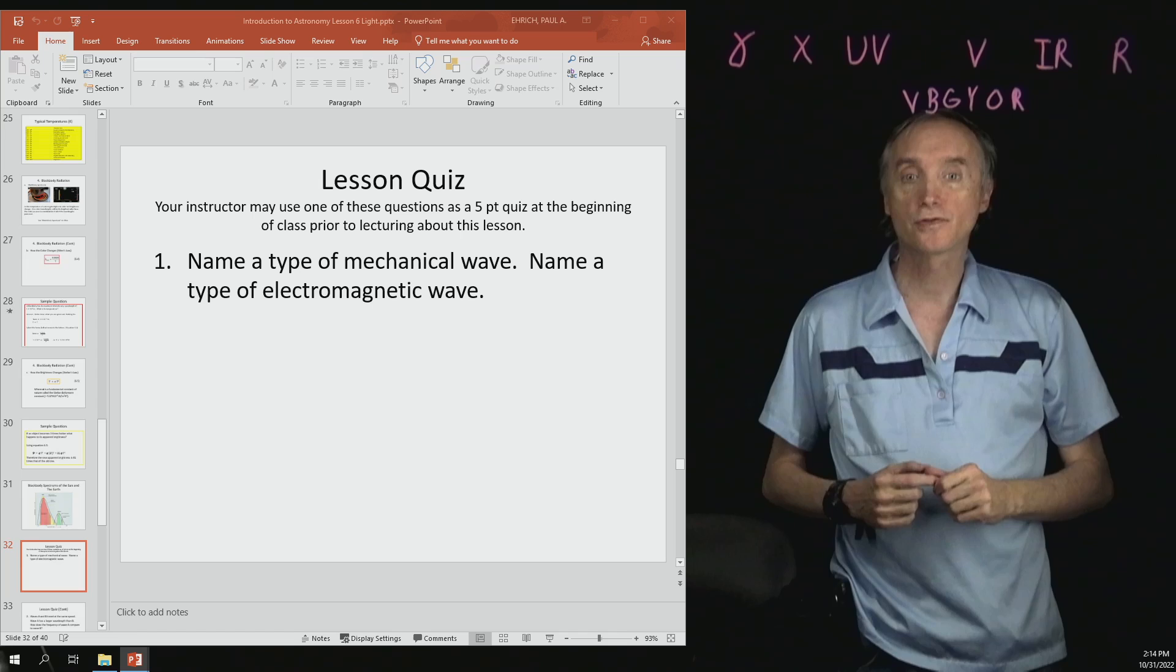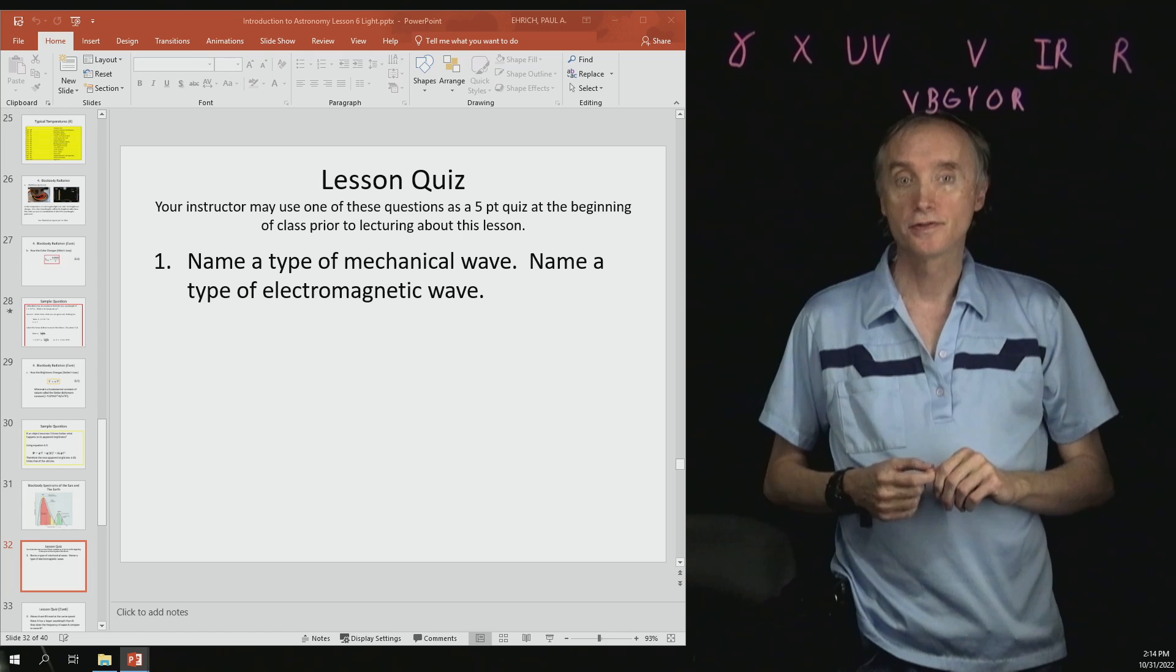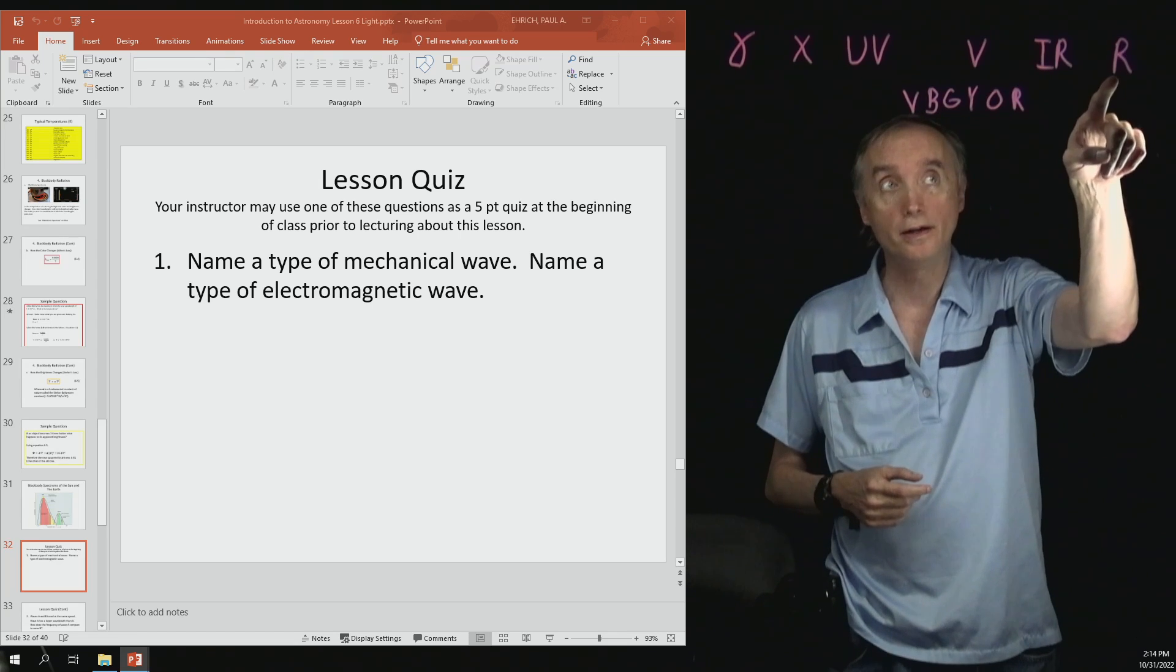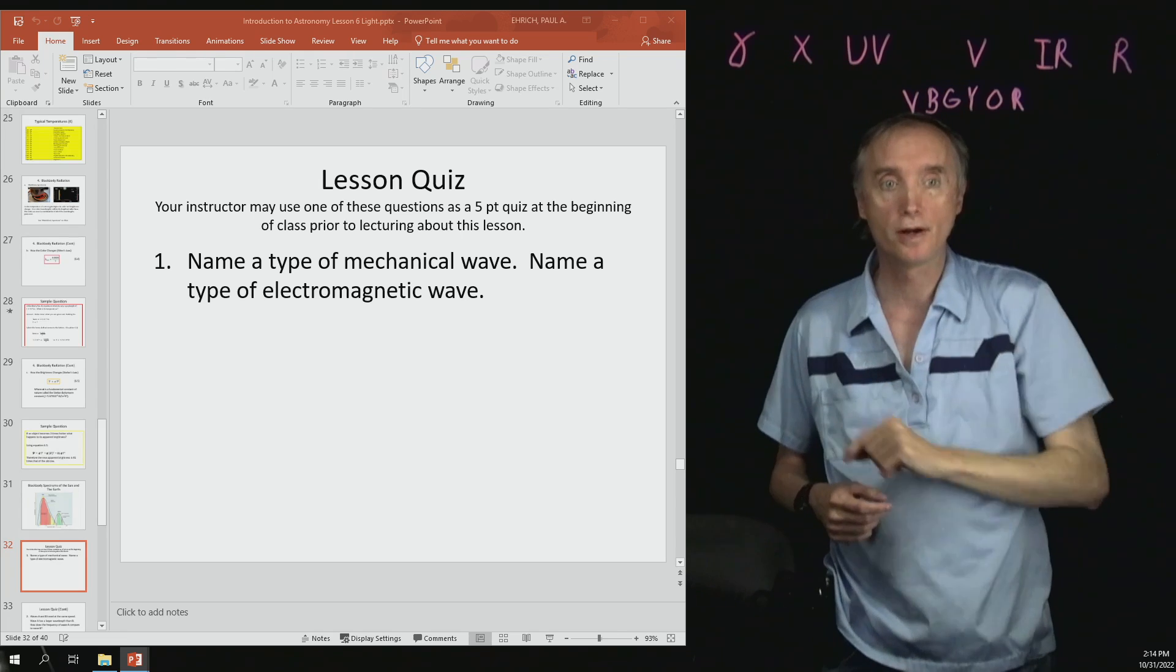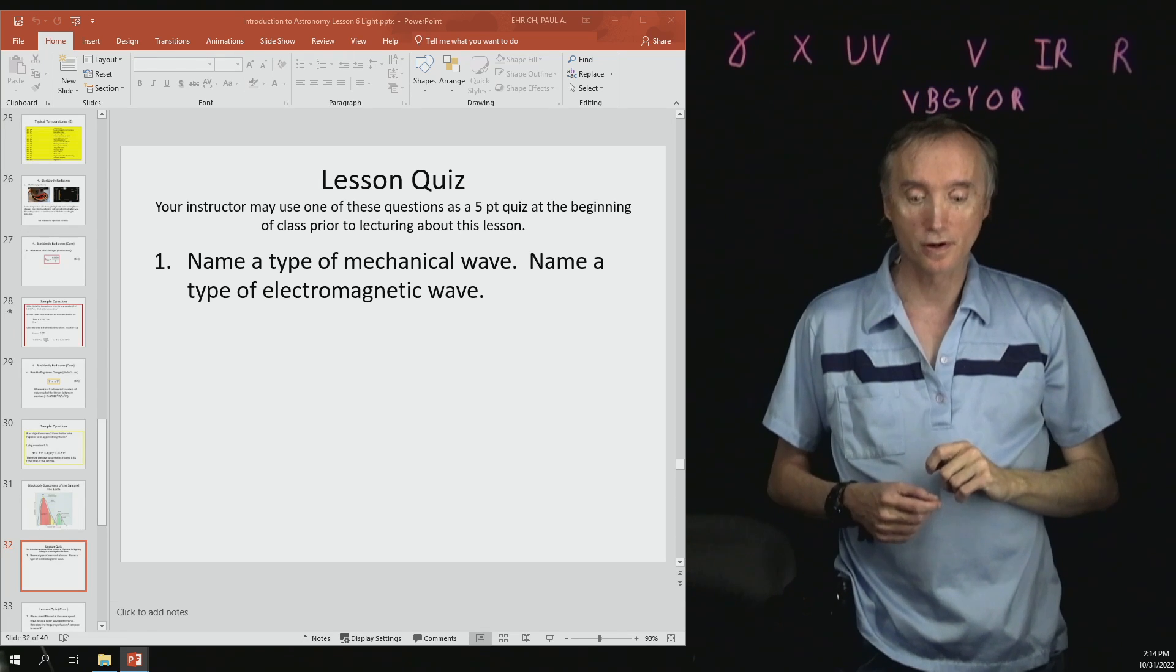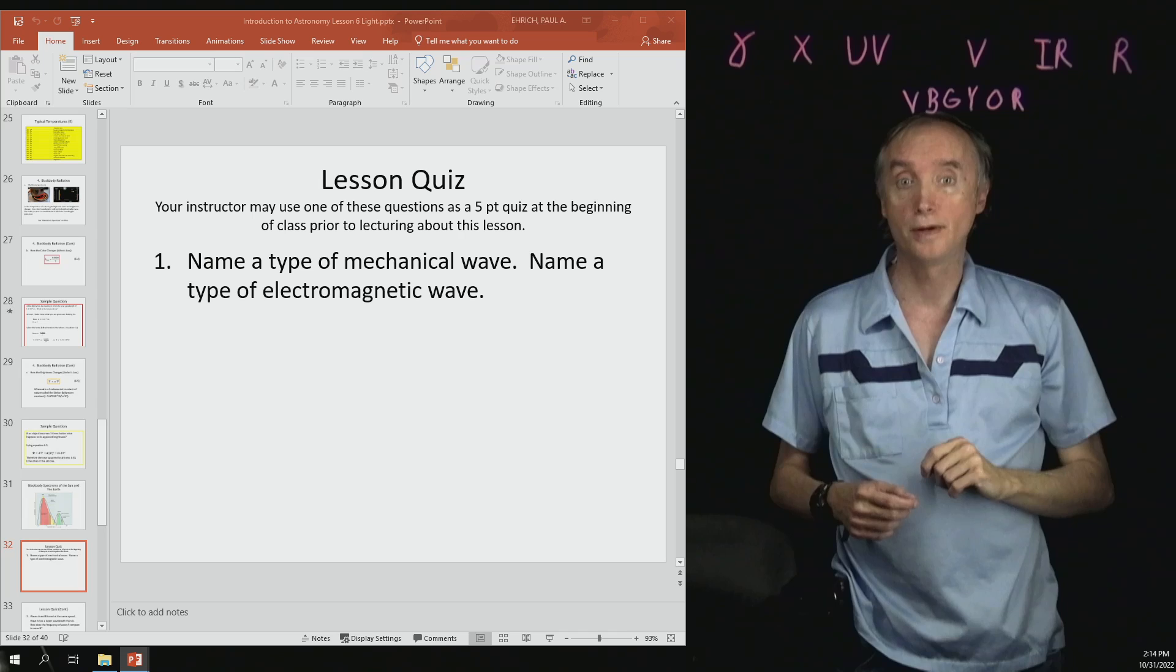Name a type of electromagnetic wave. So you could say radio waves or infrared or visible or ultraviolet or x-rays or gamma rays. So all of those are different types of electromagnetic waves.